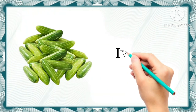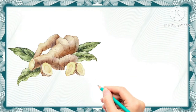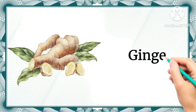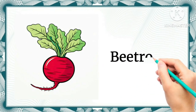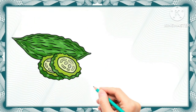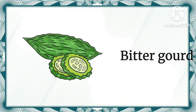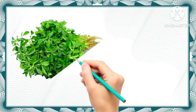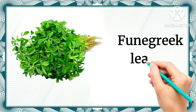Ivy gourd - this vegetable is ivy gourd. Ginger - this is ginger. Beetroot - this is beetroot. Bitter gourd - this vegetable is bitter gourd. Fenugreek leaves - these are fenugreek leaves.